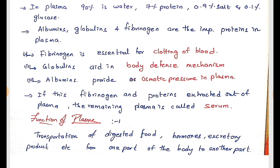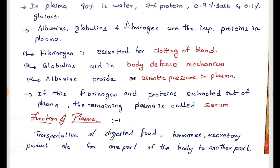When fibrinogen and proteins are extracted out of plasma, the remaining plasma is called serum. From plasma, if fibrinogen and other proteins are extracted, the remaining water content — plasma is 90 percent water — is called serum.